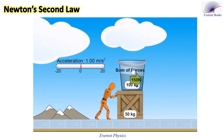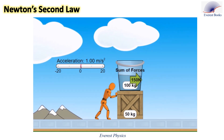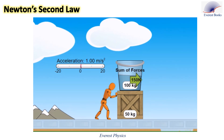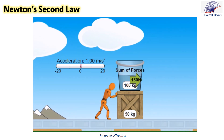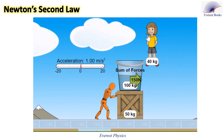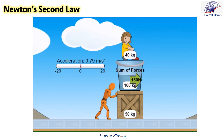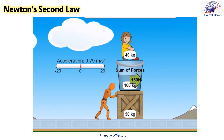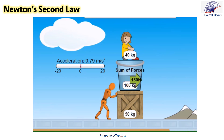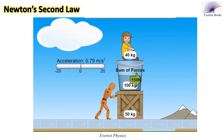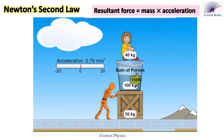Now, keeping F at 150 newtons and adding a mass of 100 kilograms, the acceleration decreases to 1 meter per second squared. Adding even more mass so that the total mass becomes 190 kilograms results in a decreased acceleration of 0.79 meters per second squared. Newton's second law states that the net force equals mass times acceleration; therefore, acceleration is proportional to the net force and inversely proportional to the mass.